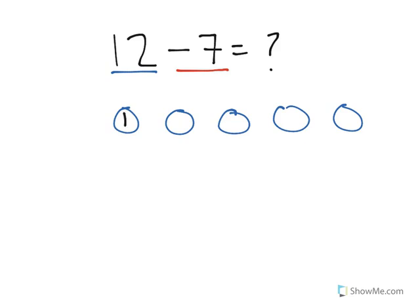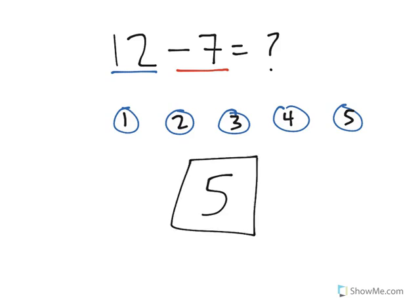Now the answer to a subtraction problem is how many are left. Let's count: 1, 2, 3, 4, 5. So 12 minus 7 equals 5. Remember in a subtraction problem, the first number is the number you start with. The second number that you're subtracting is how many you need to take away. And the answer is how many are left.